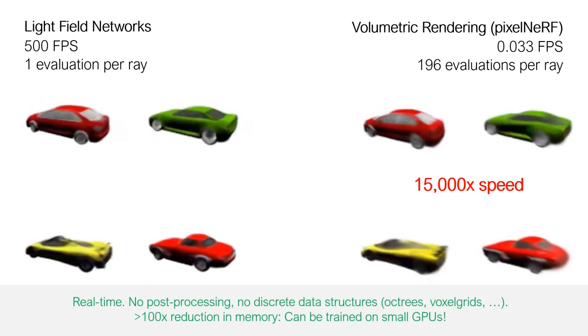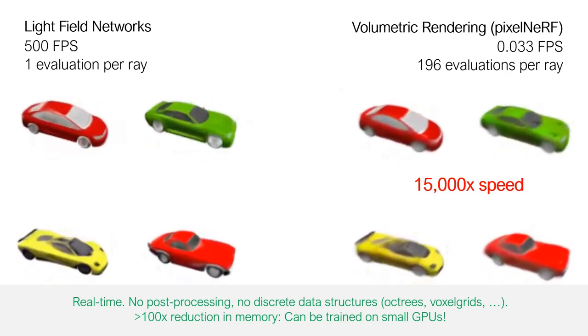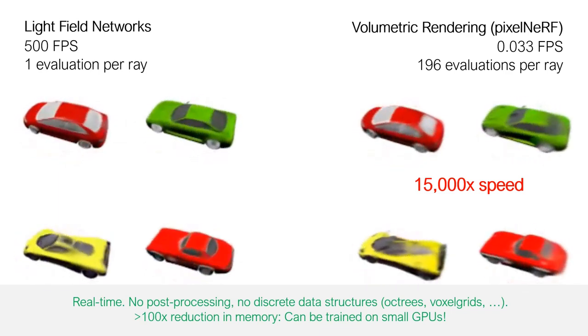LFNs also require 100 times less memory during forward and backward passes, allowing them to be trained on small GPUs.